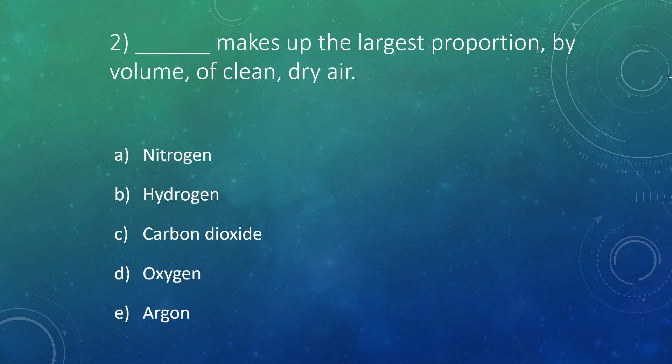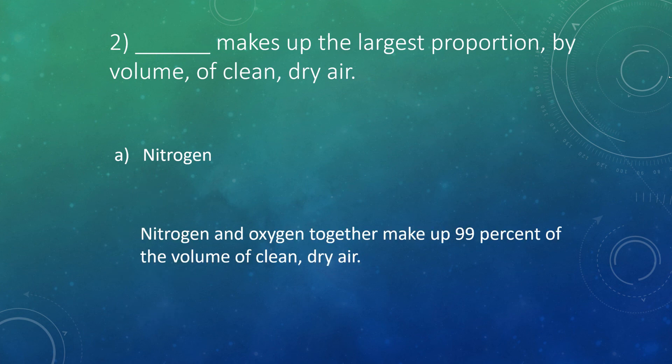Number two: What makes up the largest proportion by volume of clean and dry air? So what gas is most abundant? The answer here is A, nitrogen. Nitrogen followed by oxygen together make up 99% of all air in our atmosphere.